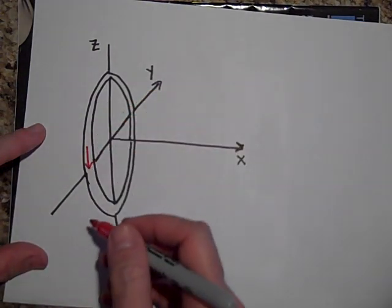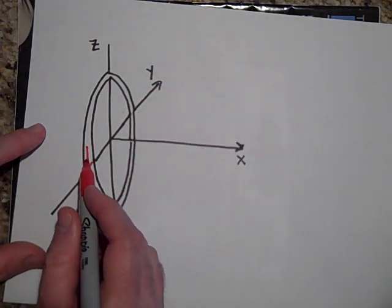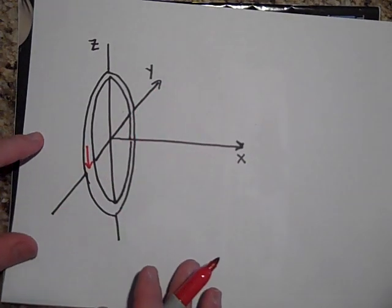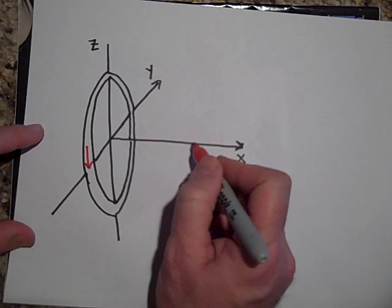That's the eye through it. It's going around like this. This part is closer to you than this part. And they want to know what the magnetic field is, say, right here.